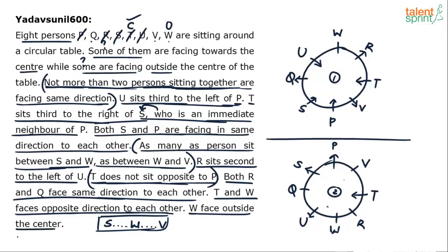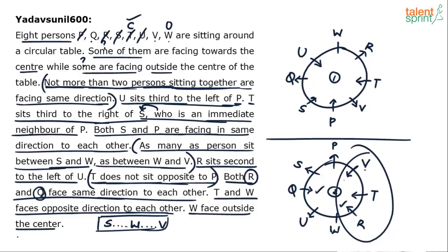In Case 2, S and P both face outwards. So V must face center and Q must also face center. Since Q faces center, R must also face center. But this creates V, T, and R all consecutively facing center — which violates the 'not more than 2 consecutive' rule. Therefore Case 2 is eliminated.